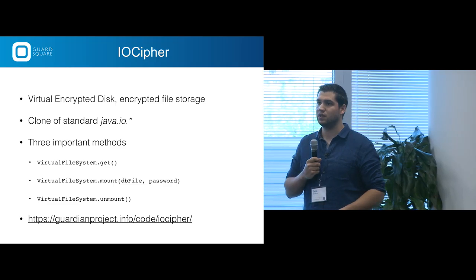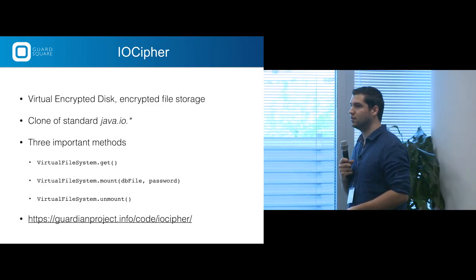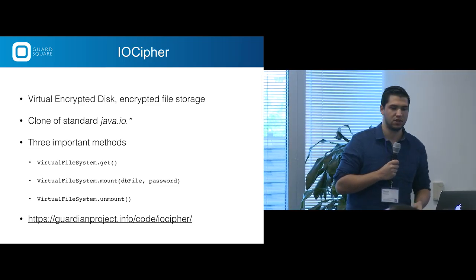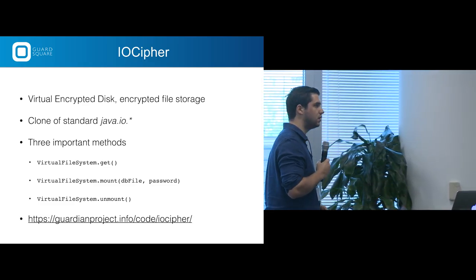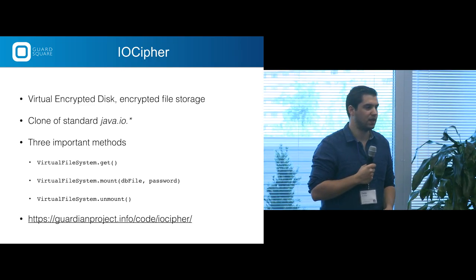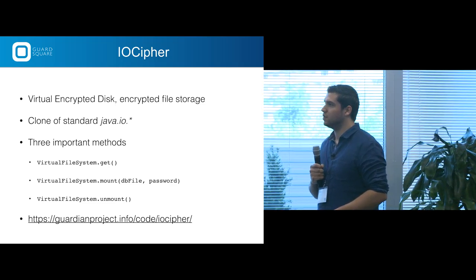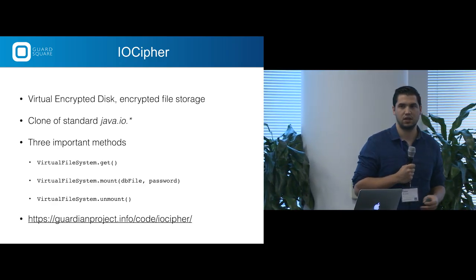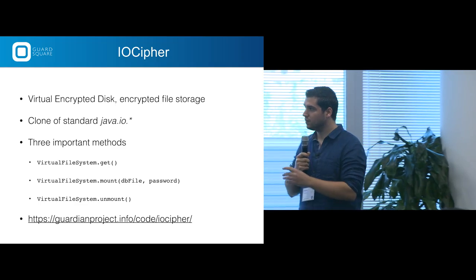IOCipher — it basically gives you a virtual encrypted disk, which is an encrypted file storage for your app. Everything you write to this file storage will be encrypted and decrypted on the fly, and it's a clone of the Java.io APIs. You need to know three important methods: how to get a virtual file system, how to mount it with a password, and how to unmount it. Once you have this in place, you can just start using the virtual encrypted disk and write to it.